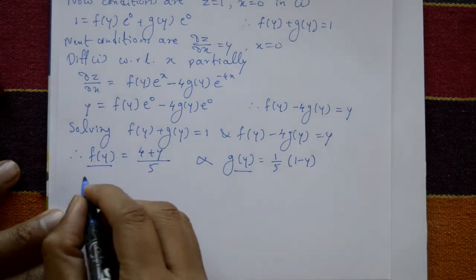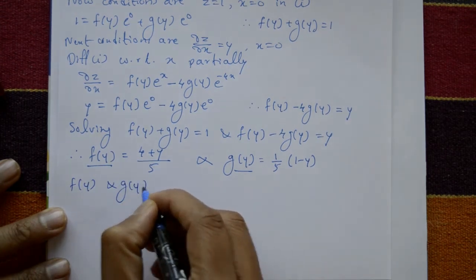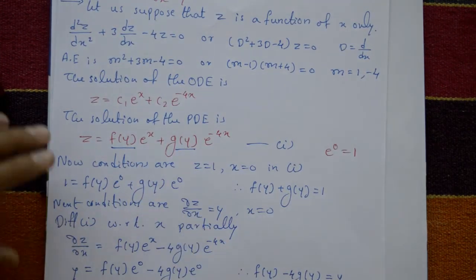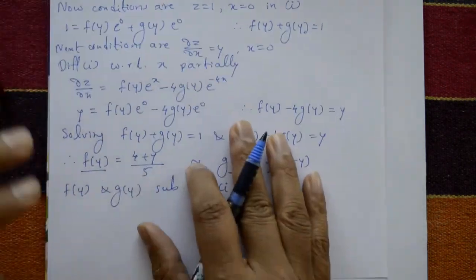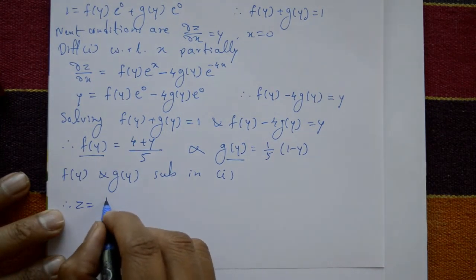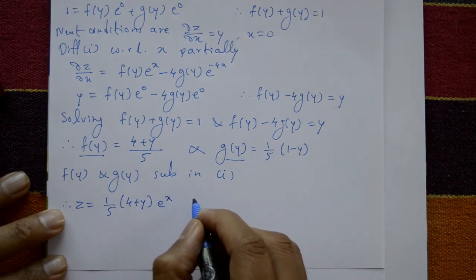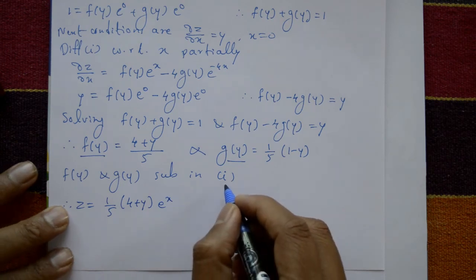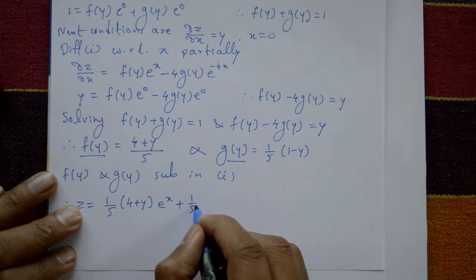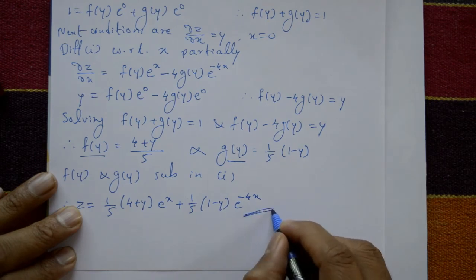Substitute f(y) and g(y) into equation 1. The required solution is z = (1/5)(4 + y)·eˣ + (1/5)(1 − y)·e^(−4x).